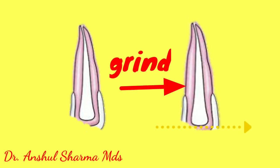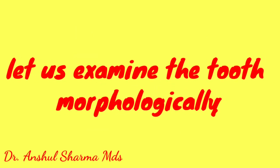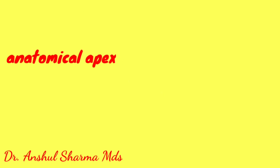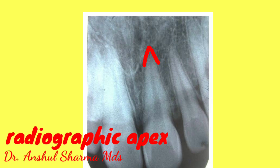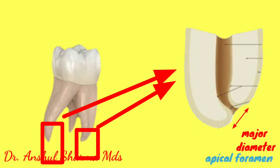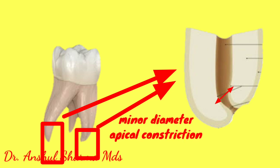If you examine a tooth anatomically, the apex is known as the anatomical apex. The same apex examined radiographically is known as the radiographic apex. Anatomically, the apex has two parts: one is the major diameter or apical foramen, which is situated eccentrically — off-centered from the anatomical apex.